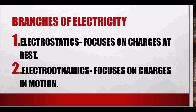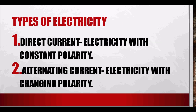We have two branches of electricity. Electrostatics focuses on charges at rest, and electrodynamics focuses on charges in motion. We also have types of electricity: direct current, which has constant polarity meaning it does not change, and alternating current, which has changing polarity.